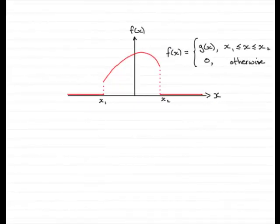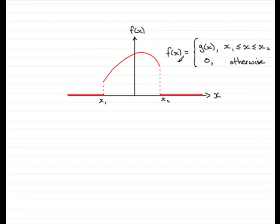Welcome to this tutorial on the cumulative distribution function. Before we start, I want to show you a general probability density function given by f of x. I've called this section g of x — it can be any curve in the section between x1 and x2. Outside of x1 and x2, we have that f of x is equal to 0 otherwise, given by this straight horizontal line.